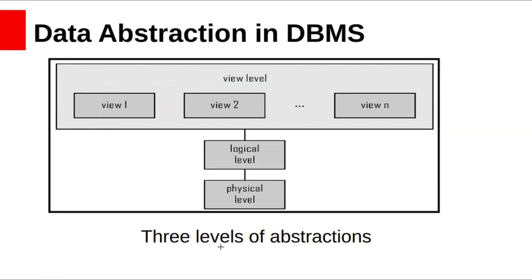We have three levels of abstraction: physical level, logical level, and view level. The physical level describes how data is actually stored in the database, including complex low-level data structures in detail. The logical level describes what data the database stores and what relationships exist among the data, describing an entire database in terms of a small number of relatively simple structures. The view level describes only part of the entire database. Because of the variety of information stored in large databases, many users do not need all the information — they need to access only part of the database. So the view level provides many different views for the same physical database.